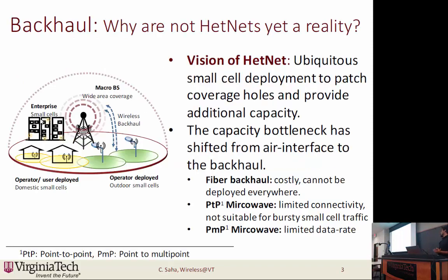Let's first talk about heterogeneous cellular networks, or hetnets. We all know that the data demand is skyrocketing and network densification is one key solution. One way we can do that is to deploy more and more low power small cells to patch the coverage dead zones of the macro base stations. This improves the channel quality observed by the user and hence we can achieve higher data rates. So if this solution were true, why are we not yet surrounded by small cells?